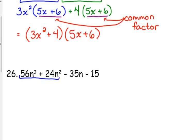When we're looking at 56n³ + 24n², what's our GCF? 8n². 8 times 7 is 56, it's got an n left in there. When we take 8 out of 24, we're left with 3.